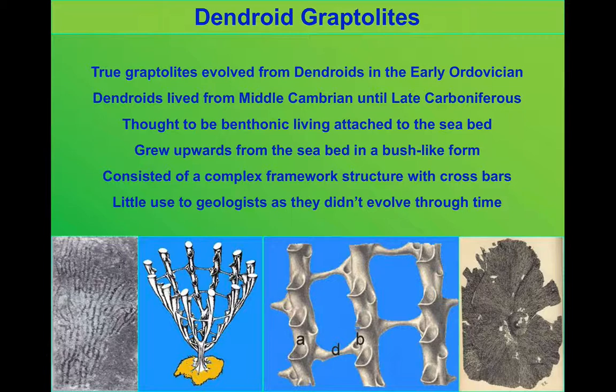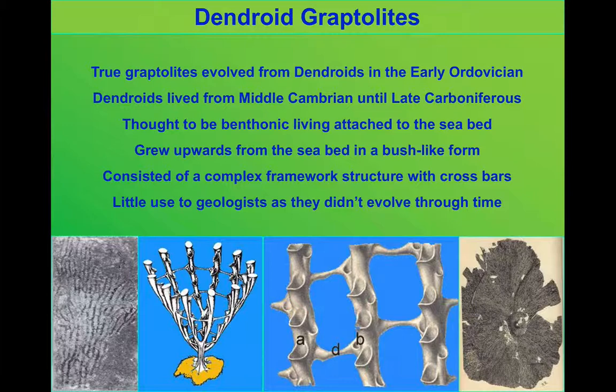The Graptolites were another group that appeared in the Cambrian explosion. What we call dendritic or dendroid Graptolites — ones that were almost tree-like in their complexity — evolved in the middle Cambrian period. The true Graptolites, though, were a little later than that, from the early Ordovician. We think these dendroid ones lived attached to the seabed, growing upwards.